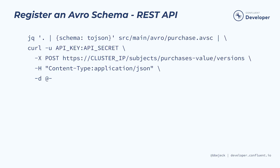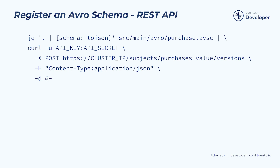Let's see the registration process using the Schema Registry REST API. In this example, we use the command line JSON tool JQ in conjunction with the REST API. Since Avro schemas are defined in JSON, you can use them as is in the command. Protobuf schema definitions are not defined in JSON, so you need to first get them into JSON format before you can register them using the REST API. In this example, we use a helper script to parse and format the schema into JSON.